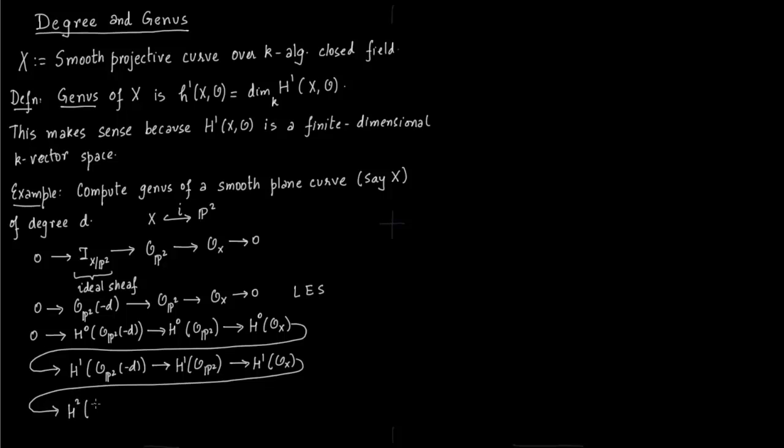Now we have to use theorem 4.1 on page 122 of Daniel Perrin's book Algebraic Geometry. So first we have this group is 0 and h²(O_P²) is 0. So we have an isomorphism from h¹(O_X) to h²(O_P²(-d)).